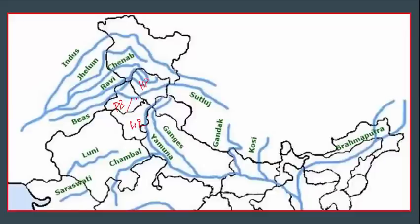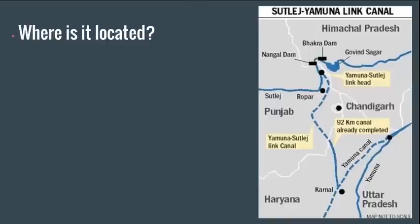So this is what is proposed — they are trying to make a canal in this particular location. Let's zoom into this area to understand the various features. This is your Satluj river entering into Punjab. This is Himachal Pradesh; this is Punjab. This white color line is the boundary between Himachal Pradesh and Punjab. Satluj is entering here into Punjab and flowing in this direction. You have Bhakra and Nangal Dam here, and Gobind Sagar is a reservoir.